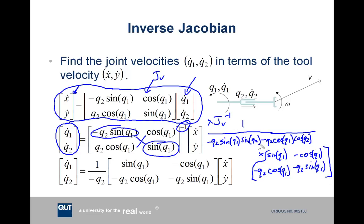Now this inverse, this determinant, one on the determinant simplifies simply to one on negative q2, and then you get the rest of this matrix and this is what we've got written out here. So this is our expression which relates our tool point velocities to what we need to set our joint velocities to.